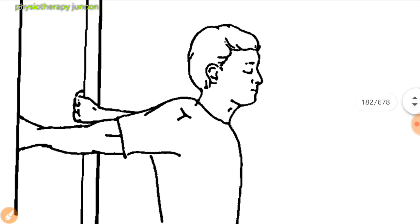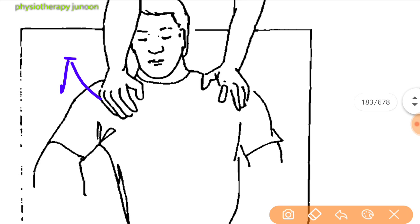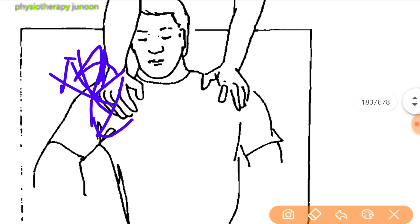Next is the pectoralis minor stretch. Lie on the back pushing the shoulder towards the ceiling. With a partner giving resistance, relax and have the partner stretch the shoulder down. Hold the stretch for 5 seconds.